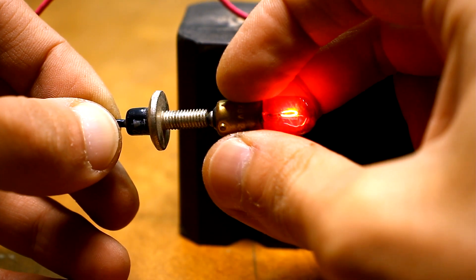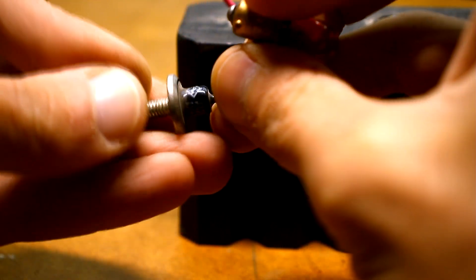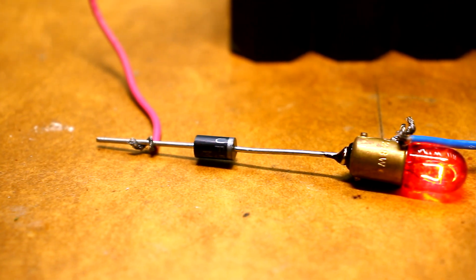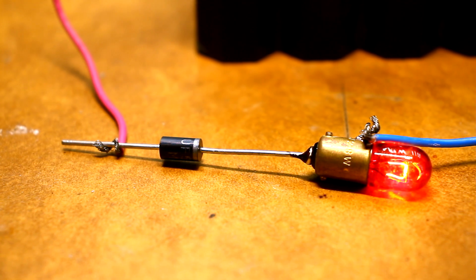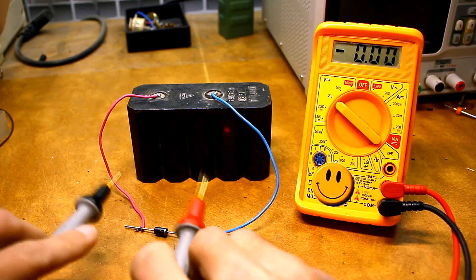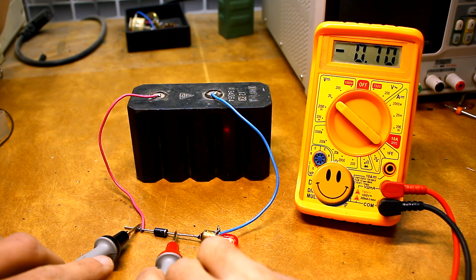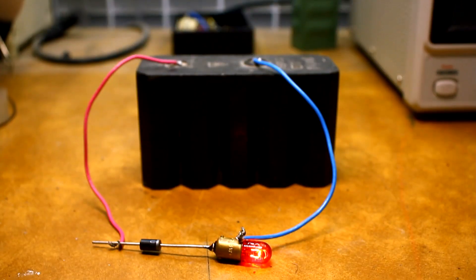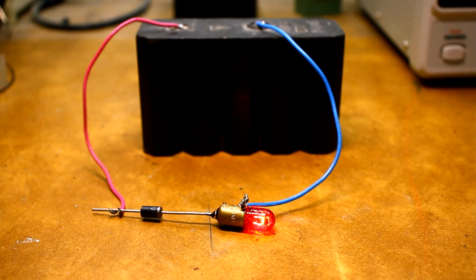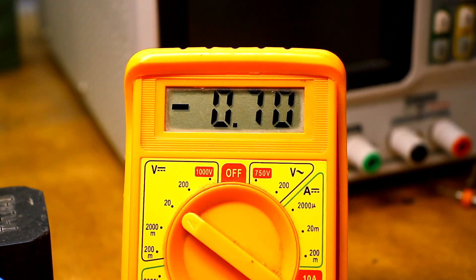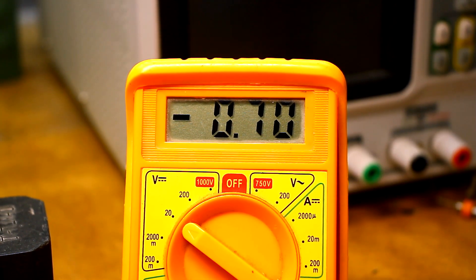It's well known that a diode conducts current well in one direction and hardly conducts in the other. The connection in which the diode conducts current is called direct. We also know that when current passes through a diode, a certain voltage drop is formed at its p-n transition. This drop depends on the type of diode. For example, for common silicon rectifier diodes, this drop is 0.5 to 0.7 volts. For Schottky diodes, 0.1 to 0.2 volts.